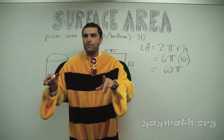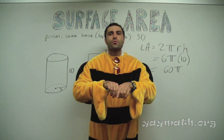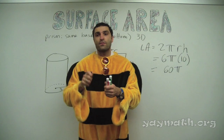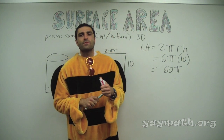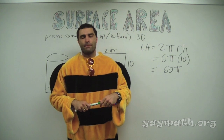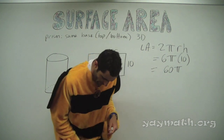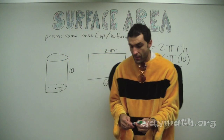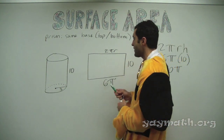Any comments? I commend you. Some people prefer the formula. If we do this on the SAT, is it going to ask us to leave it in terms of pi or simplify it? Generally leave it in terms of pi. So that's the lateral area of the cylinder: 60π.